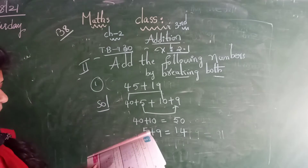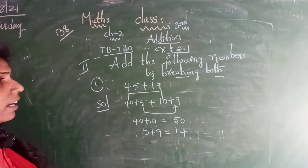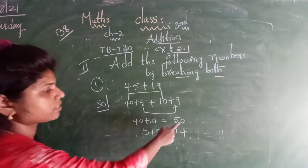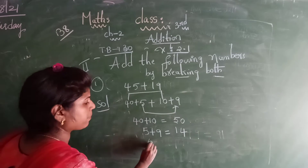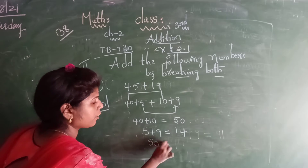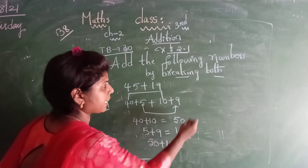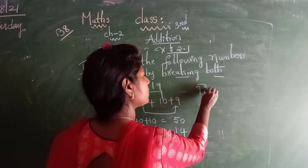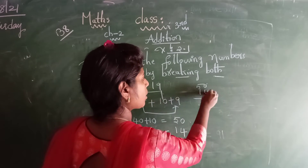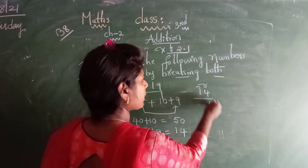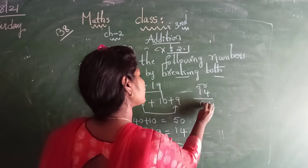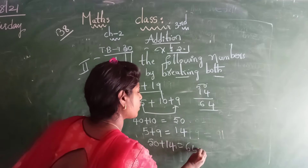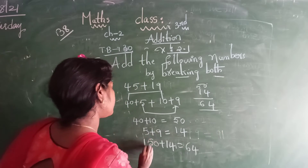Add the following numbers by breaking both numbers. You have to do the addition. 50 plus 14 — how much will you get? 4 plus 0 is 4, 5 plus 1 is 6. 64 is the answer.